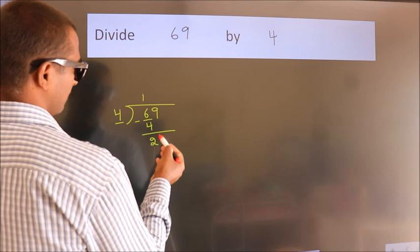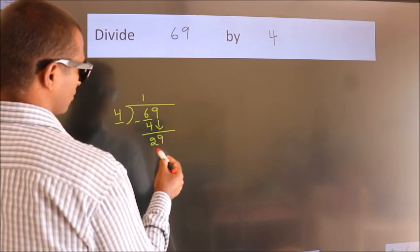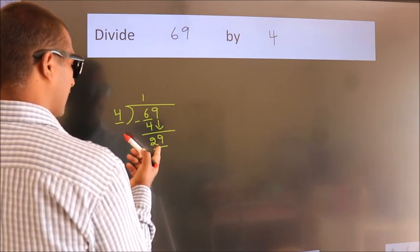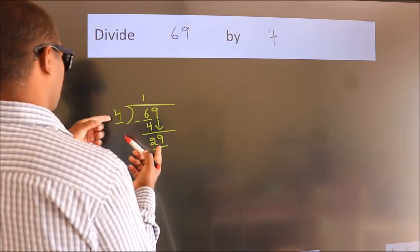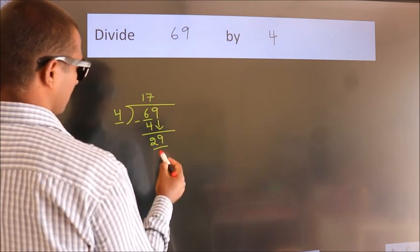After this, bring down the beside number. So, 9 down. So, 29. A number close to 29 in 4 table is 4 sevens 28.